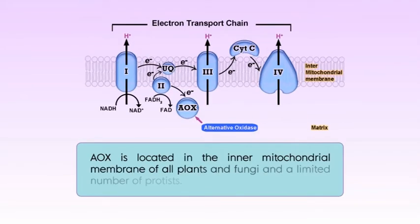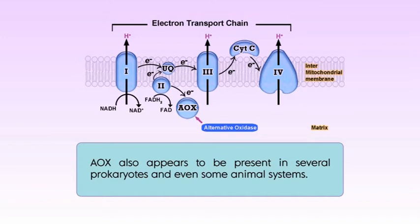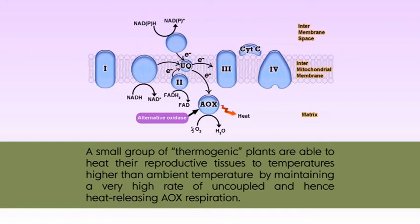Alternative oxidase, AOX. Genes encoding AOX are ubiquitous in the kingdom Plantae. AOX is located in the inner mitochondrial membrane of all plants and fungi and a limited number of protists, and also appears to be present in several prokaryotes and even some animal systems. A small group of thermogenic plants are able to heat their reproductive tissues to temperatures higher than ambient by maintaining a very high rate of uncoupled and hence heat-releasing AOX respiration, which can function to attract pollinators or provide optimal temperatures for floral development. However, most plants and tissues are inherently non-thermogenic, so the presence of AOX must be for other purposes.